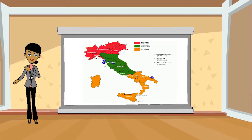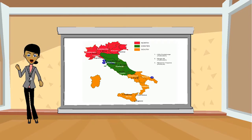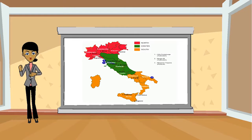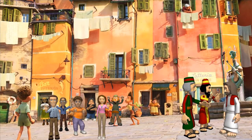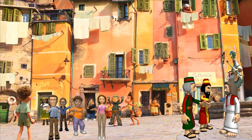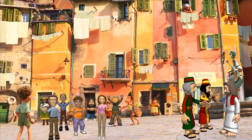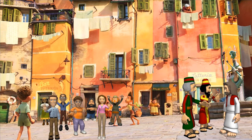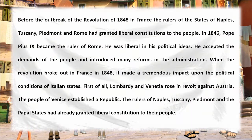Before the outbreak of the revolution of 1848 in France, the rulers of the states of Naples, Tuscany, Piedmont, and Rome had granted liberal constitutions to the people. In 1846, Pope Pius IX became the ruler of Rome. He was liberal in his political ideas, accepted the demands of the people, and introduced many reforms in the administration. When the revolution broke out in France in 1848, it made a tremendous impact upon the political conditions of the Italian states.